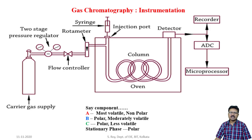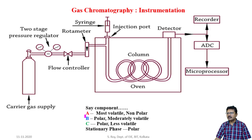For better explanation, let us take one example. Say in a particular mixture there are three components: component A, component B, and component C. These three components have different properties. Component A is most volatile and non-polar; component B is polar and moderately volatile; component C is polar and less volatile. The stationary phase is polar in nature.